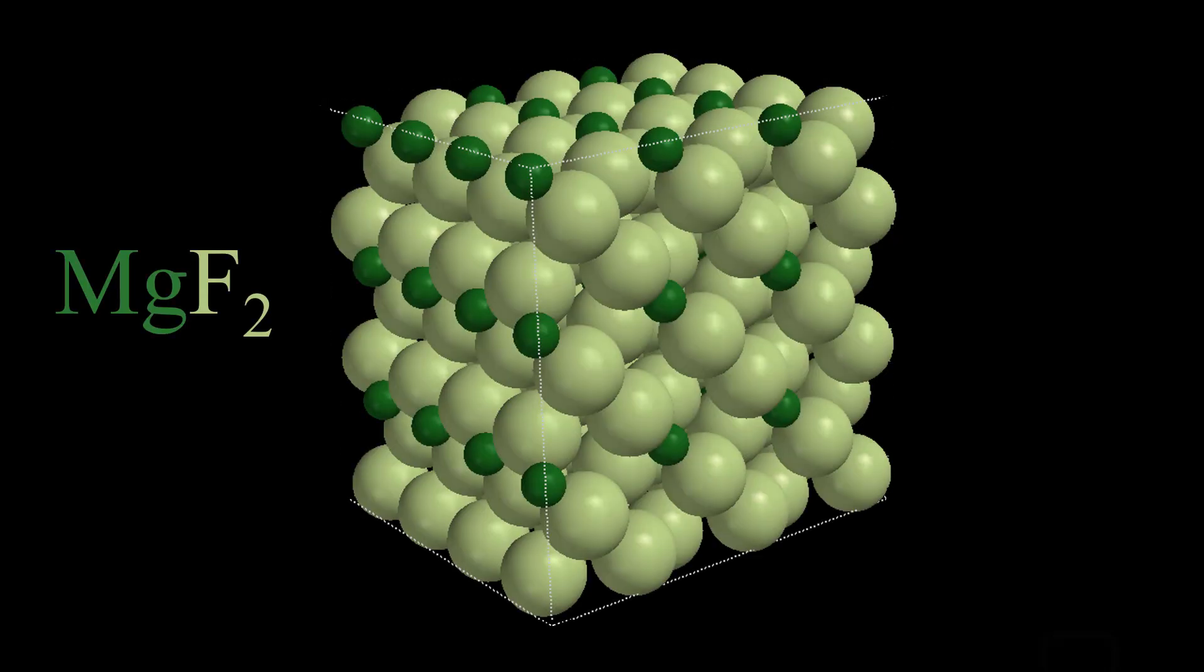With magnesium fluoride, you can see more readily the importance of ion size and ratio, two fluorides for every one magnesium, on how the ions stack in the very ordered crystalline structure.